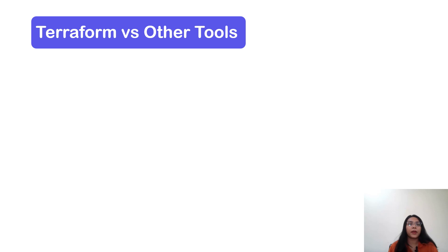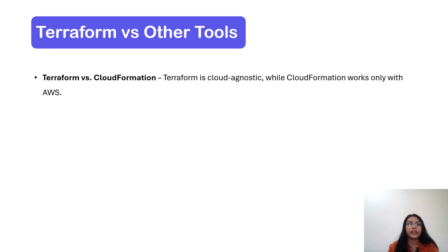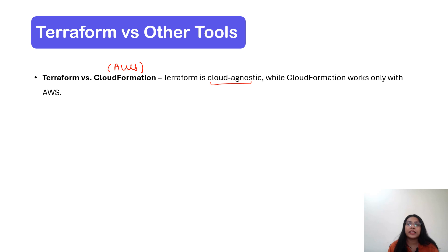What if we compare Terraform with other tools? The first would be Terraform versus CloudFormation. CloudFormation is a tool used in AWS. The difference is that Terraform is cloud agnostic — it is compatible with almost all cloud providers available today — whereas CloudFormation works only with AWS. So Terraform would be best when you want to make use of multi-cloud or hybrid infrastructure.